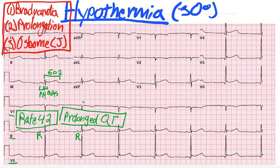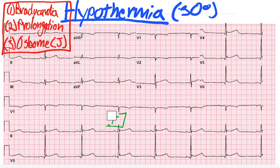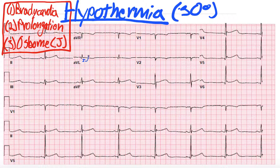Then we have this most well-known, almost pathognomonic concept, which is Osborne waves. I'm going to erase all this, as it's more straightforward and easier to see on different EKGs, and then we're going to hone in on elevated J points. So what is a J point? A J point is the point at which the QRS terminates and the ST segment starts. So in AVL, where you don't see an elevated J point, I'm just going to label the J point — it's right here, this niche where the QRS ends and the ST segment starts.